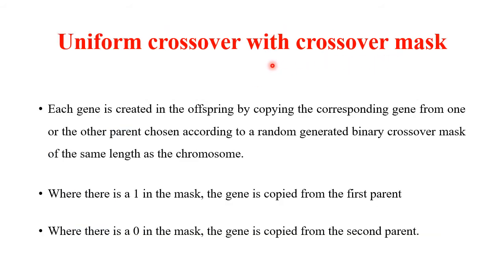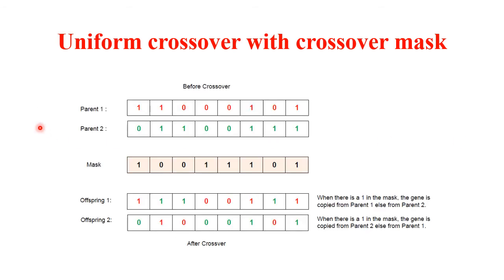A crossover mask can also be applied in uniform crossover. A crossover mask is a binary string of exactly the same length as the parent. Each gene in the offspring is copied from one parent or the other depending on the corresponding bit in the mask. Where there is a 1 in the mask, the gene is copied from the first parent; where there is a 0, the gene is copied from the second parent. For offspring 2, the rule is reversed.